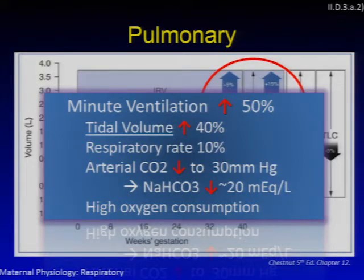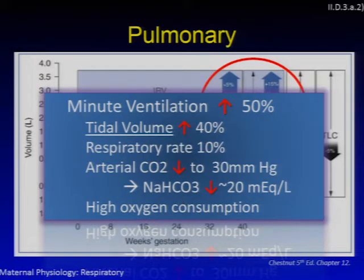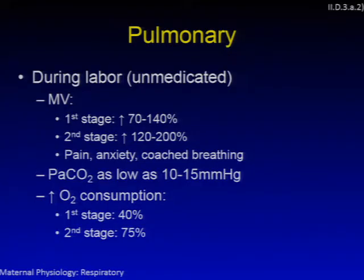All of this translates to a decrease in arterial CO2 down to about 30 mmHg. Bicarb compensatorily decreases to about 20 mEq/L. There is also high oxygen consumption associated with the pregnant and laboring state. During labor, minute ventilation goes up significantly — up to 140% by the end of the first stage of labor and up to almost 200% by the second stage — in an unmedicated woman.